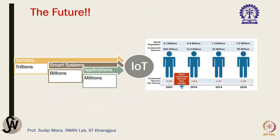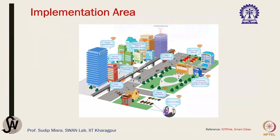In the future, we are getting into a world where there are going to be billions of applications supported by billions of smart systems and run on trillions of sensors. Already by 2008, there were more connected devices than people. In the IoT world, the number of interconnected sensor-enabled devices runs into billions and trillions. The problem is that we do not really know how to develop such a network — scalability is a major challenge.